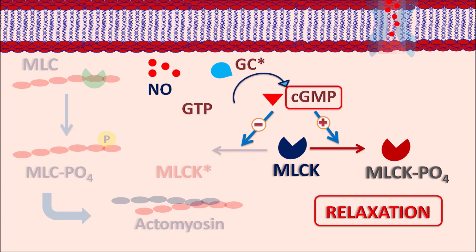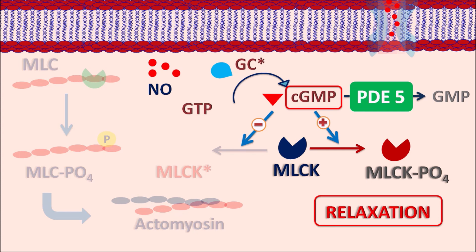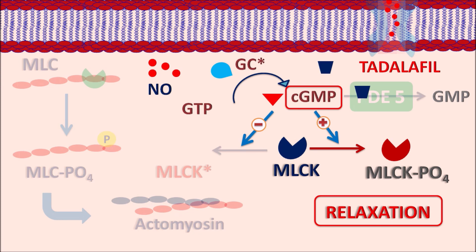The action of cyclic GMP is limited by its metabolism. Cyclic GMP is converted into GMP by the phosphodiesterase type 5 enzyme. Tadalafil acts on this phosphodiesterase type 5 enzyme, inhibiting its activity. When this enzyme is inhibited, cyclic GMP levels are increased within the corpus cavernosum, which increases relaxation as well as relaxation of blood vessels supplying the corpus cavernosum, producing erection in the patients.